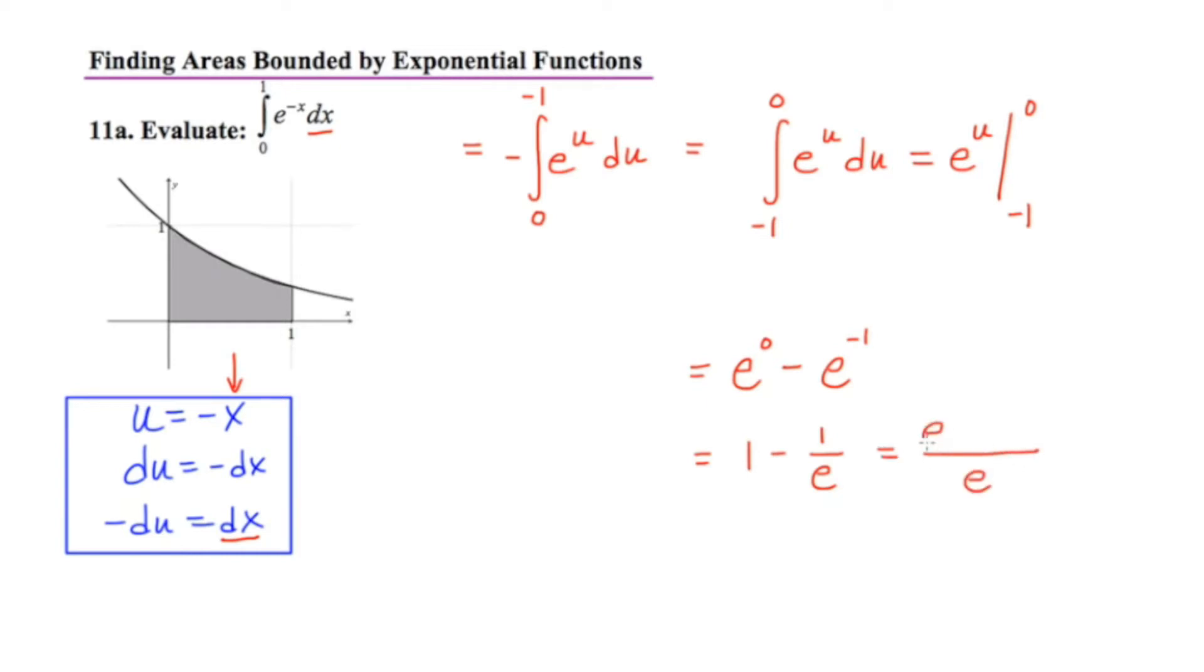This would be e minus 1 over e. So either of these would be acceptable, and this is the area under that curve. Let's go on to the next slide.